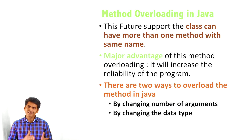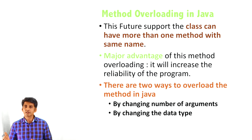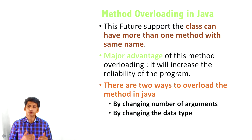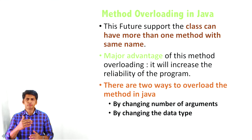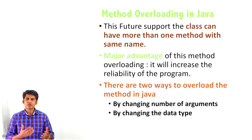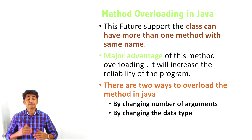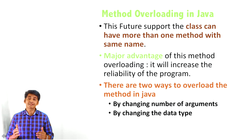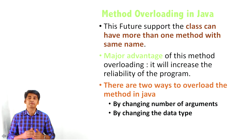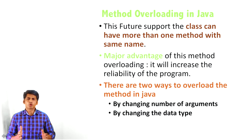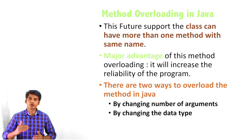In this concept, a class can have more than one method with the same name. For example, if you want to do the addition operation and at the same time the subtraction operation, both operations can have different methods. You can have the method name as 'arithmetic' — both methods can have the same name but perform different operations, with different arguments and different number of arguments. The main advantage of this method overloading concept is that it can increase the reliability of the Java program.